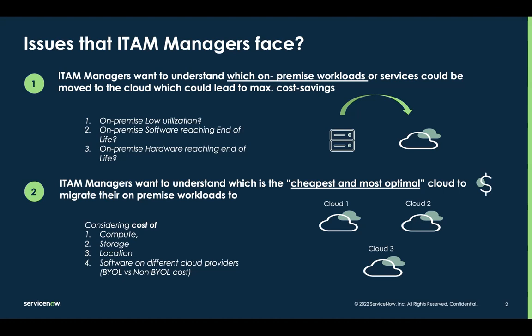They want to have an understanding of these specific questions while moving towards the cloud. iTime managers also want to understand which is the most cost-effective and optimal cloud to migrate to — is it AWS, Azure, or Google Cloud? And while considering the cheapest option, they want to understand the cost on these different cloud providers as a breakdown of compute, storage, location, and softwares with bring-your-own-license cost versus non-bring-your-own-license cost, so that they can make the most effective decision.